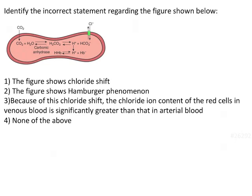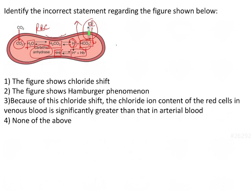Identify the incorrect statement regarding the figure shown. In the figure, CO2 is entering inside the RBC — this looks like an RBC because there is a central concavity. This CO2, along with water, in the presence of carbonic anhydrase, forms H2CO3, which further dissociates into H+ and bicarbonate ion. A pump is shown where chloride comes inside the cell and HCO3 is expelled out. The H+ forms HHb by combining with hemoglobin. This whole phenomenon is known as the chloride shift, or hamburger phenomena.